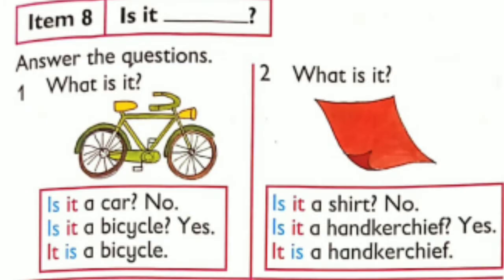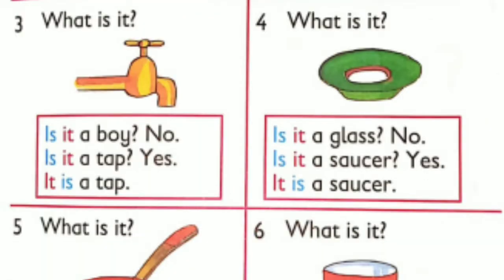Item 8 — Is it? Answer the questions. What is it? Is it a car? No. Is it a bicycle? Yes, it is a bicycle. What is it? Is it a shirt? No. Is it a handkerchief? Yes, it is a handkerchief. What is it? Is it a boy? No. Is it a tape? Yes, it is a tape.